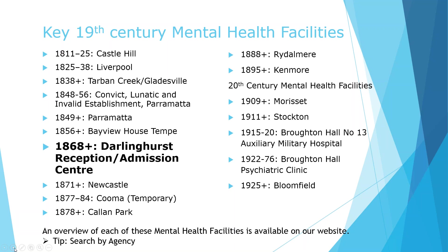Darlinghurst Reception House: on 3 July 1868, premises at Darlinghurst Jail were appointed to be a Lunatic Reception House under the Lunacy Amendment Act 1867, which allowed justices to commit persons directly to a Reception House rather than first to a jail. The Reception House opened on 24 July 1868. Its intended use was for the temporary detention of persons believed to be insane, pending determination of the nature of their illness — preventing the stigma of hospital treatment for those who recovered quickly or proved not to be insane. In 1922, the mental ward was closed as voluntary patient services became available at the Broughton Hall Psychiatric Clinic.